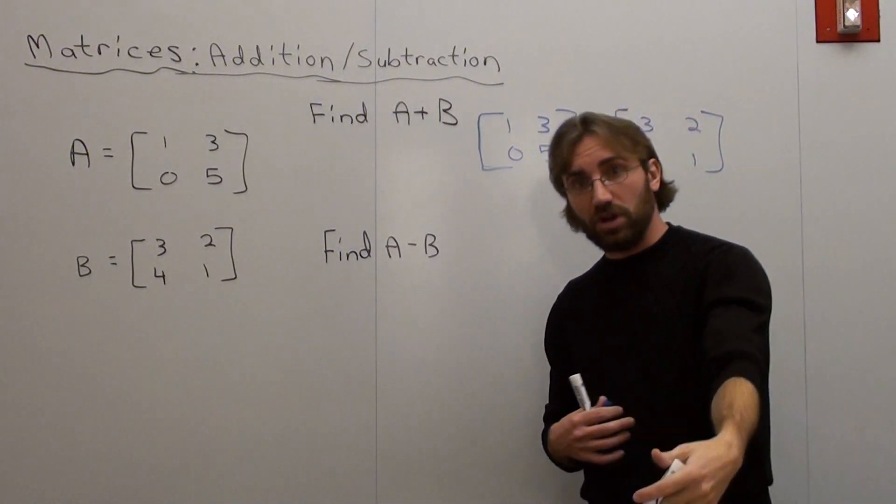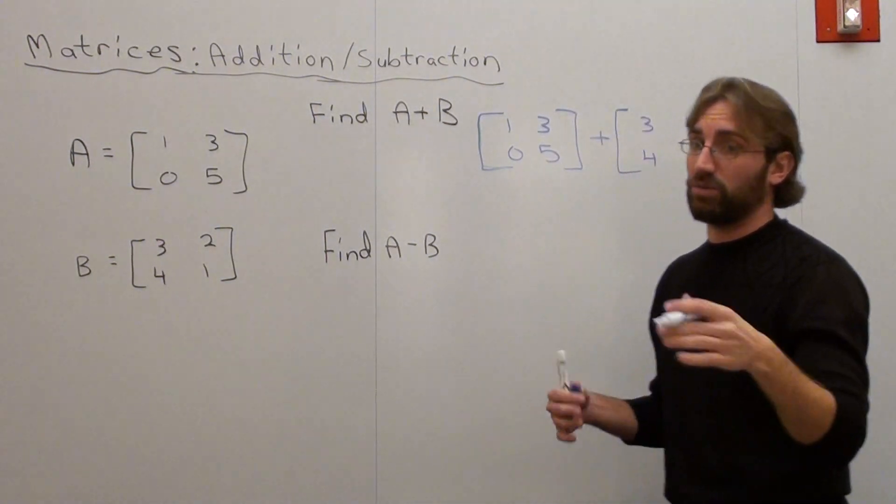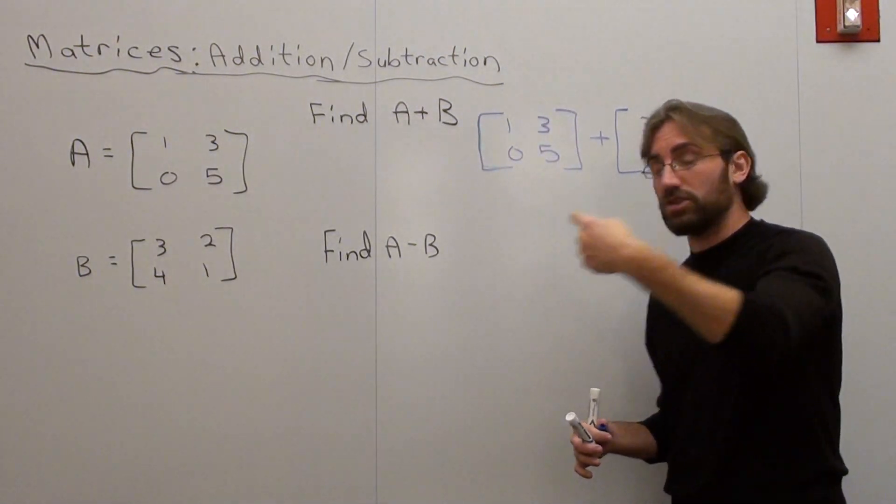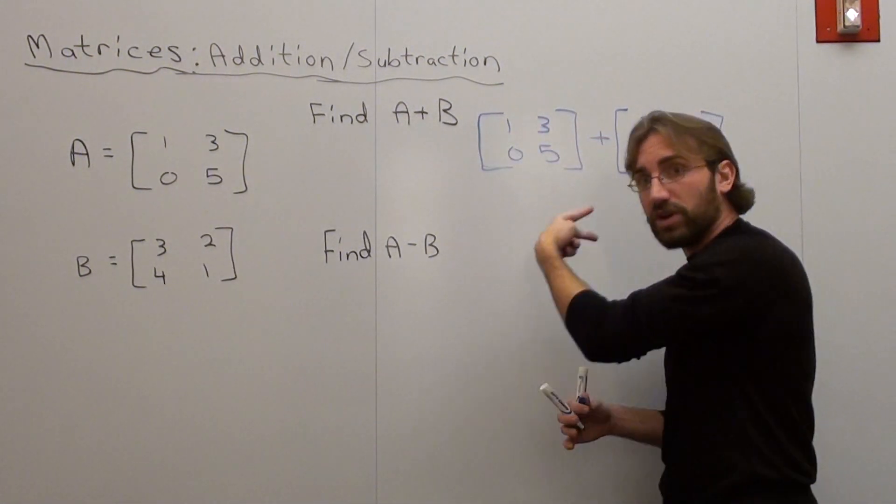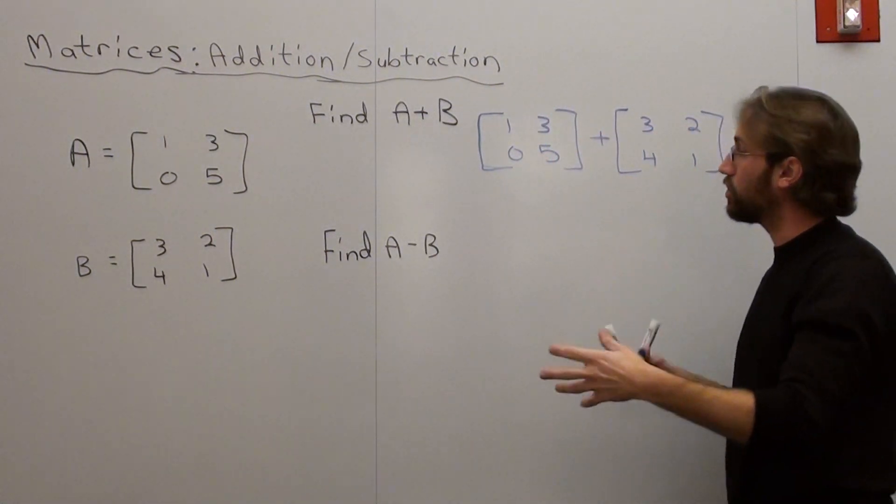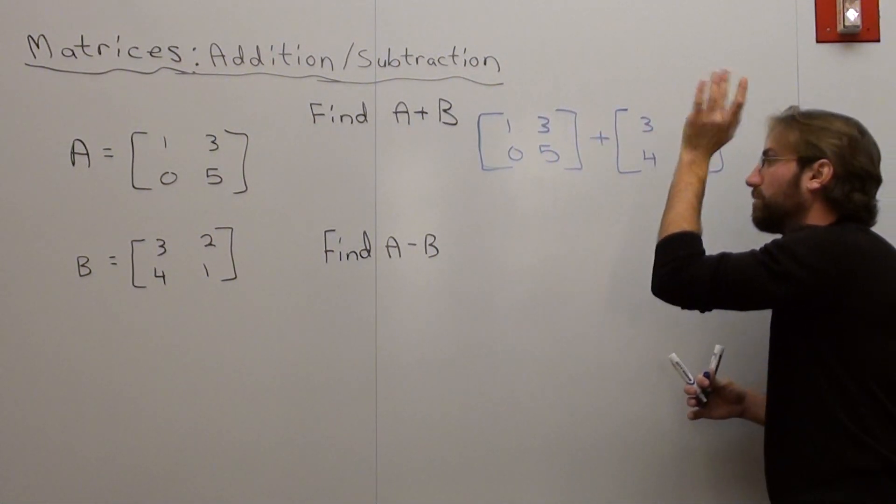Each number in the matrix itself is called an element. I already described that, and we'll talk about the dimensions really quickly. It's a 2 by 2 matrix. It's got two rows, and you always go rows first, and then two columns. This one's got two rows and two columns. So it's a 2 by 2 matrix plus a 2 by 2 matrix.